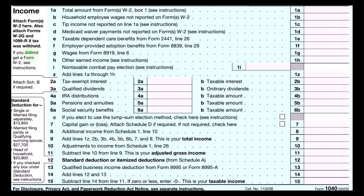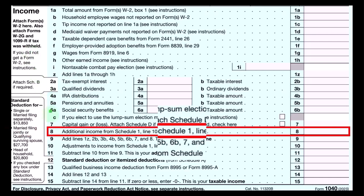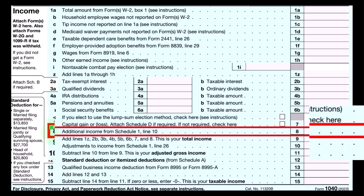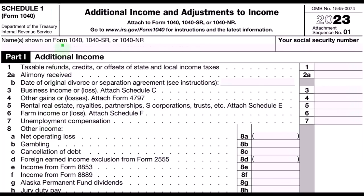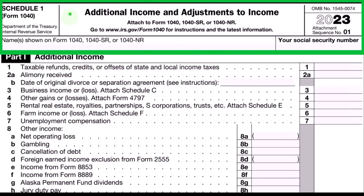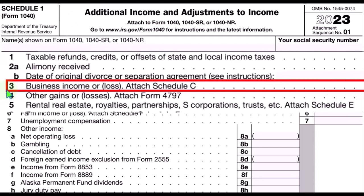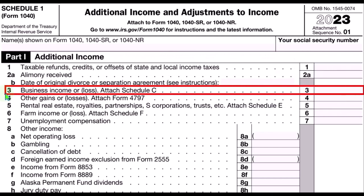This is the first page of the Form 1040, with Schedule C income eventually rolling into line 8. This is the Schedule 1 additional income and adjustments to income, where the Schedule C income eventually rolls into line 3, which is business income or loss from the Schedule C.